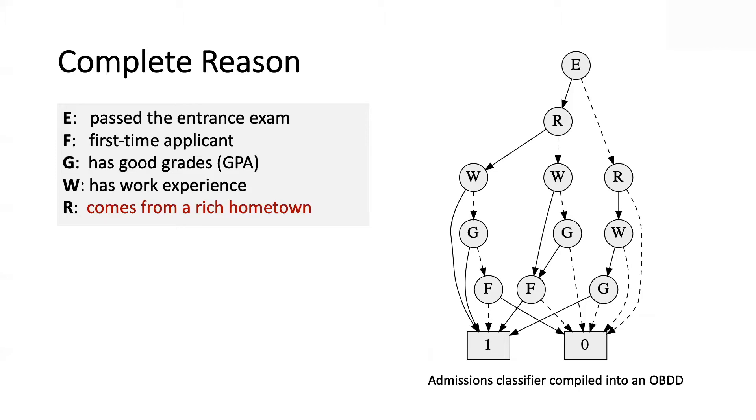What we have here is an admission classifier. It's in the form of a binary decision diagram or an OBDD. Here are the features, and one of them is designated as protected. I'm interested in knowing whether a particular decision depended on someone coming from a rich hometown or not. Now, we will say that a decision is biased. A decision on instance X is biased if it can be different on another instance Y that disagrees with X on protected features only.